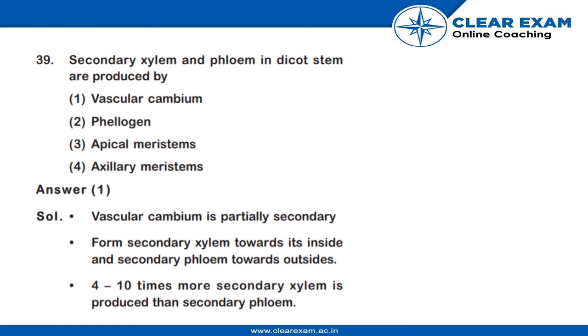Hello everyone. The question asks: secondary xylem and phloem in a dicot stem are produced by which of these? The correct answer is vascular cambium.